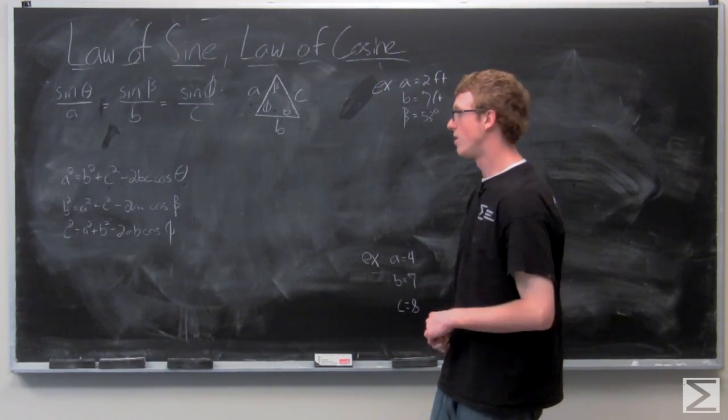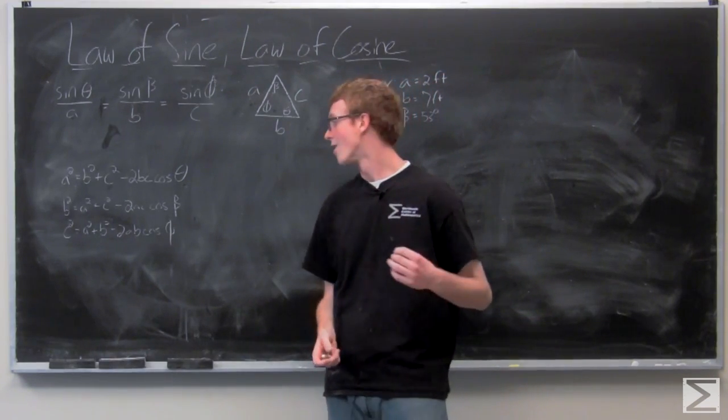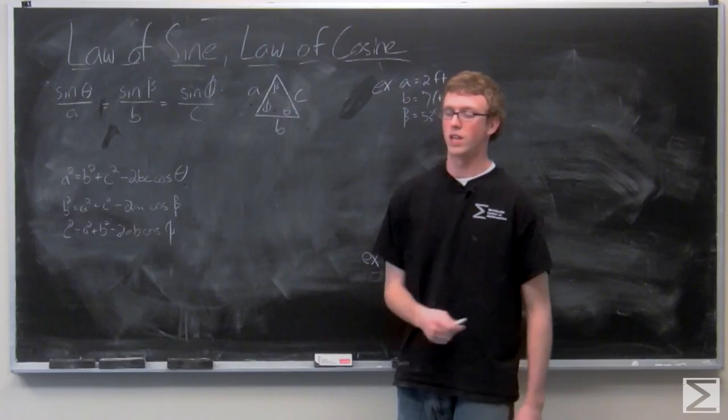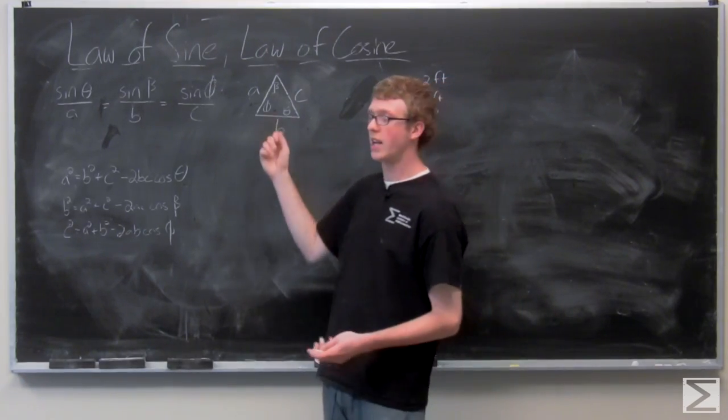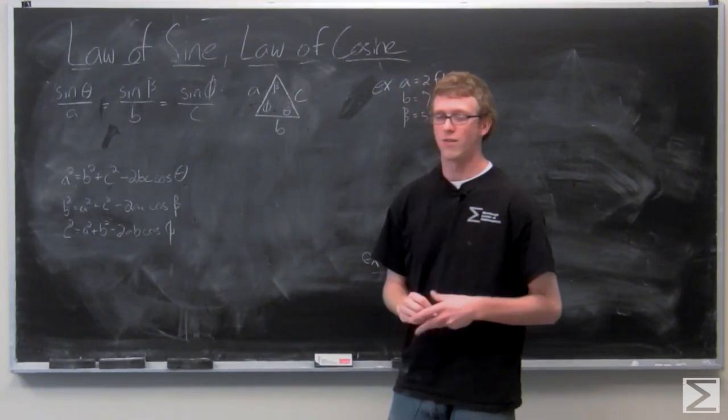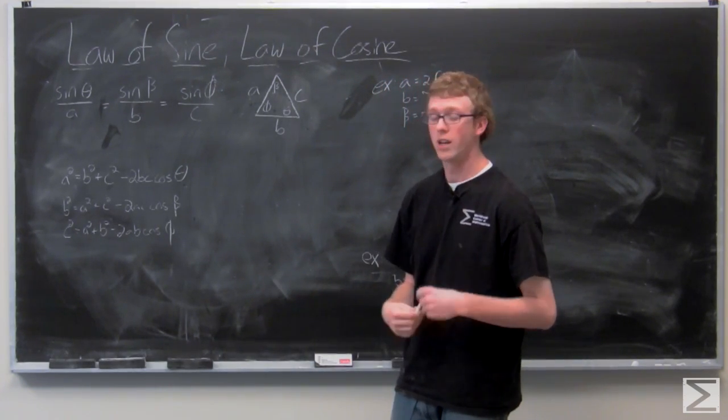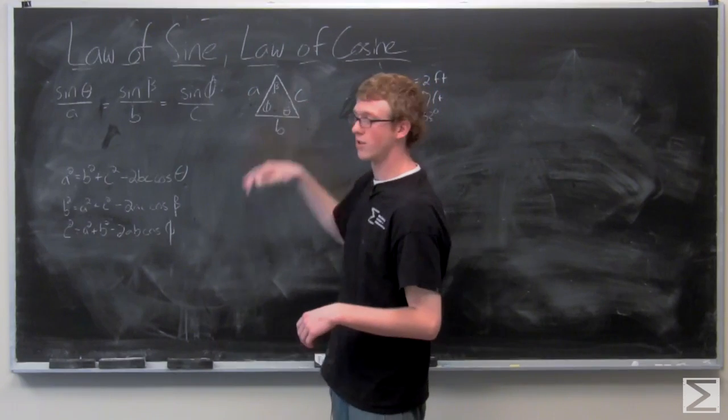These laws are going to be extremely useful because given only three values of a triangle, so it could be all three angles or it could be a, b, and c. If you're given three of those values, you can figure out what the corresponding values for the triangle are.